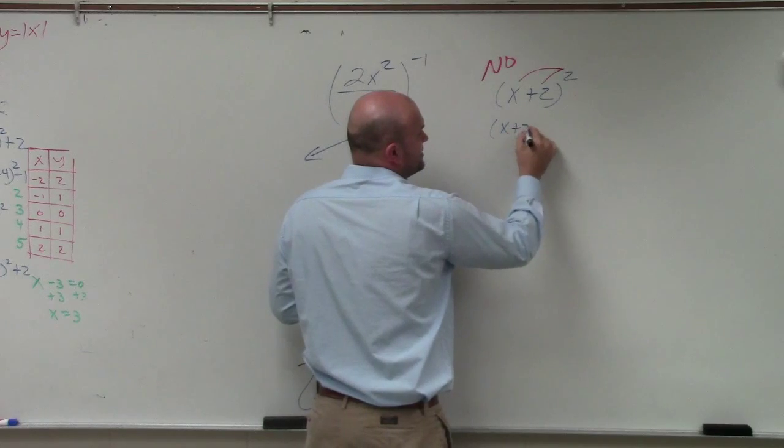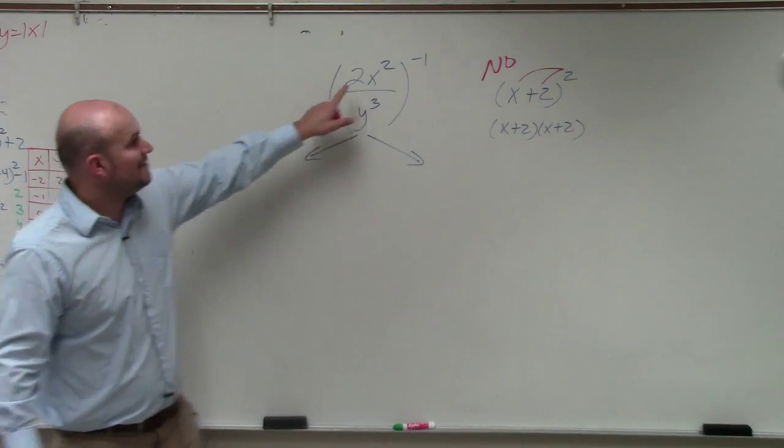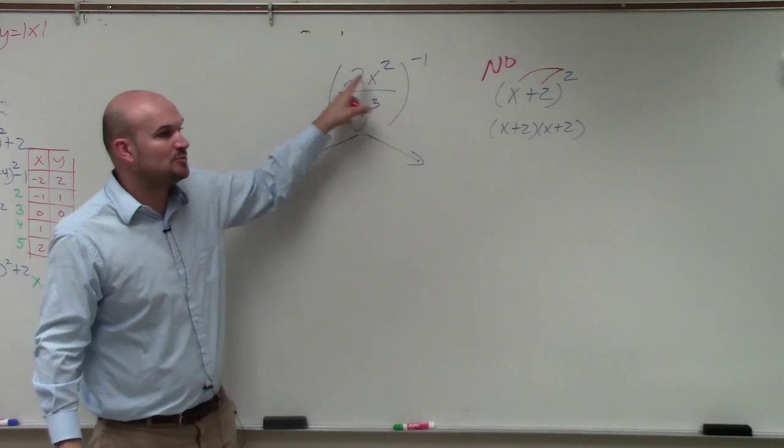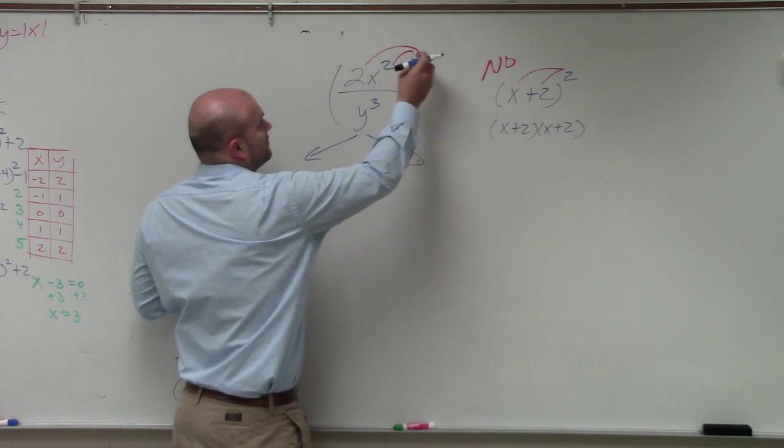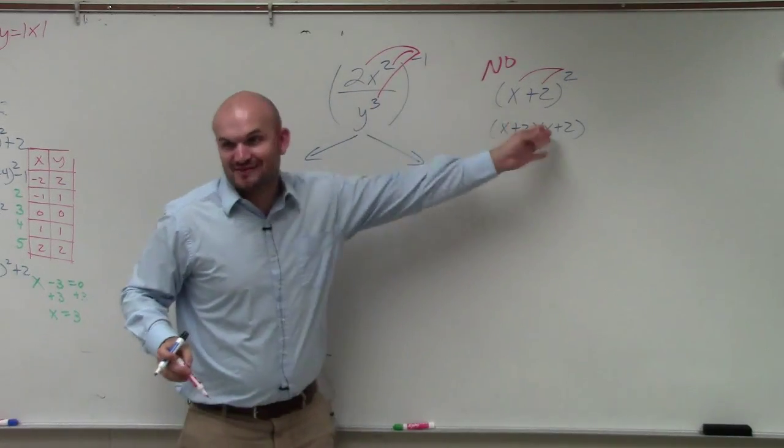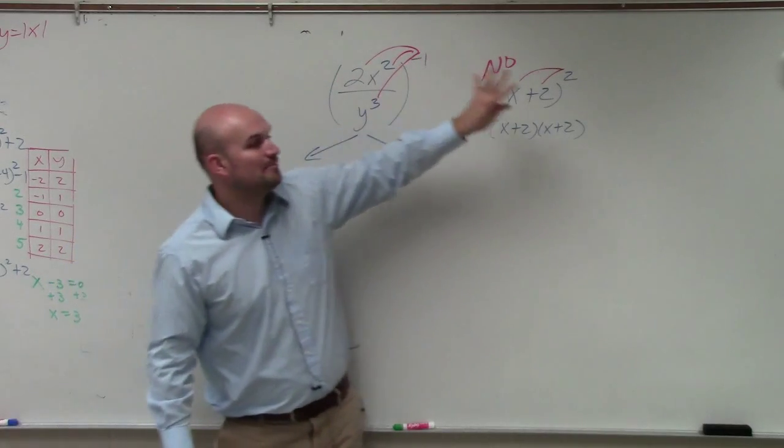x plus 2 squared is x plus 2 times x plus 2. However, when you have an expression separated by multiplication and division, you can distribute the negative. We are going to be doing both of these today. So I want to make sure you guys understand you can do it here, but not here.